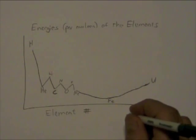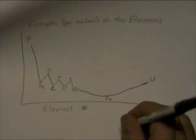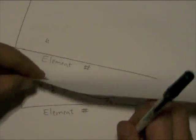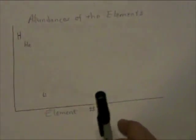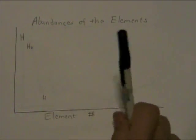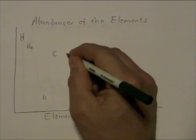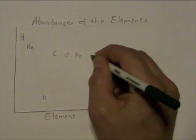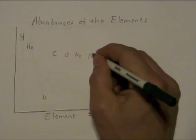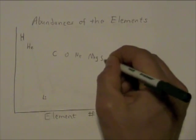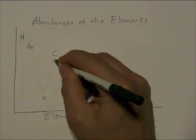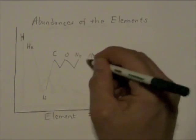Alright, so what does this mean for our prediction of abundances? Let's go back to this plot. So we expect a lot of carbon and a lot of the even-numbered elements. Oxygen, neon, I might be skipping some, but there's magnesium and silicon and so on.